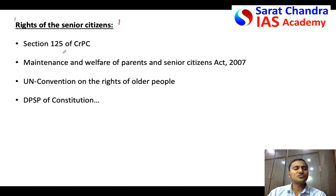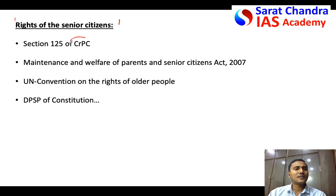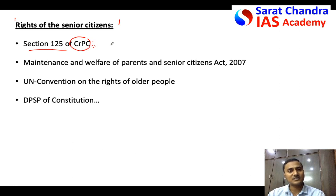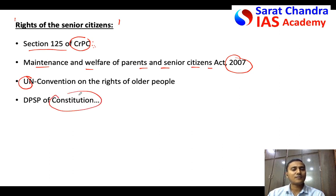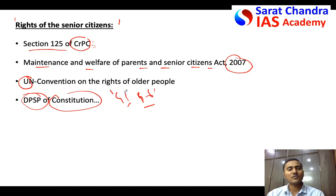Senior citizens should be aware of their rights — only then can they come out of these problems. Under the Criminal Procedure Code Section 125, old people can get maintenance from their children; failure to provide maintenance is a criminal offense. The Maintenance and Welfare of Parents and Senior Citizens Act 2007 mandates children to provide maintenance for parents or grandparents. At the United Nations level there is a convention on the rights of older people. In the Constitution of India, Part 4 — the Directive Principles of State Policy — particularly Articles 41 and 46, talks about the rights of old people. Though DPSPs are not enforceable, they provide direction for laws in India.